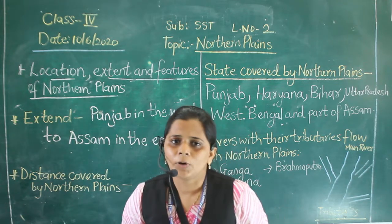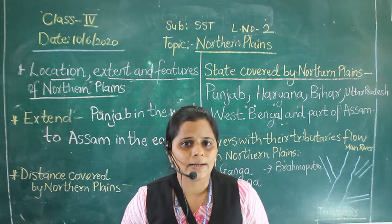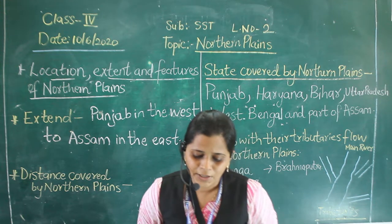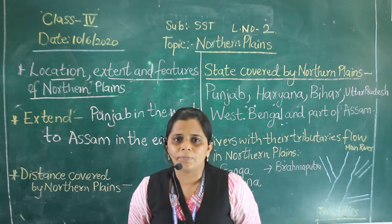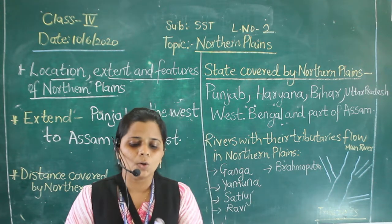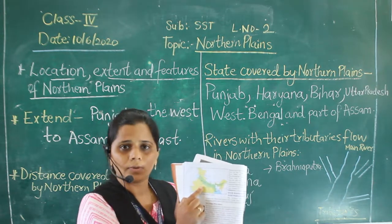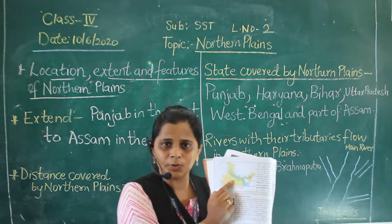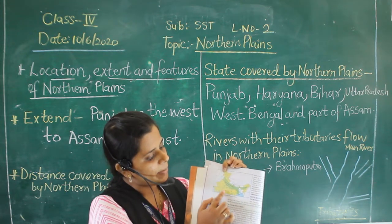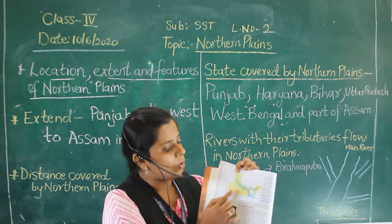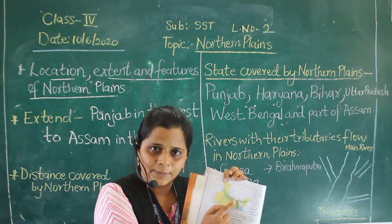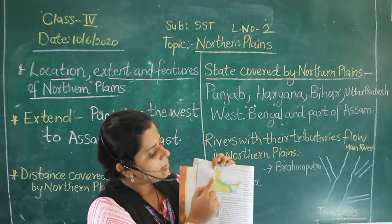You have already learnt about the northern mountains. Where are they situated? They are situated to the extreme north of India. Now my dear children, open your textbook to page number 8. Now look at this picture — it is a map of India. Here is the shaded portion which is shown in your textbook, that is the northern plains.